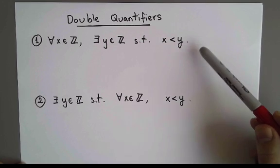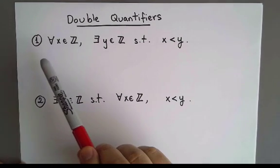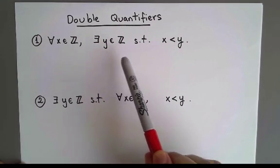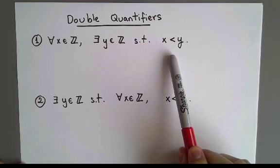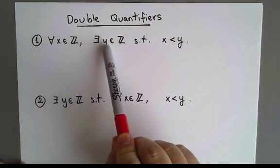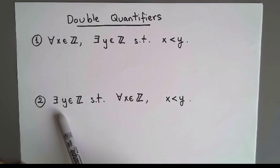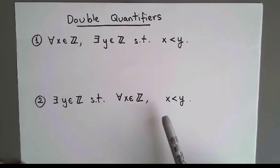I'm going to concentrate on these two examples. The first one says: for every integer x, there exists an integer y such that x is less than y. The second one is pretty much the same, but I swap the order of these two parts. It says: there exists an integer y such that for every integer x, x is less than y.